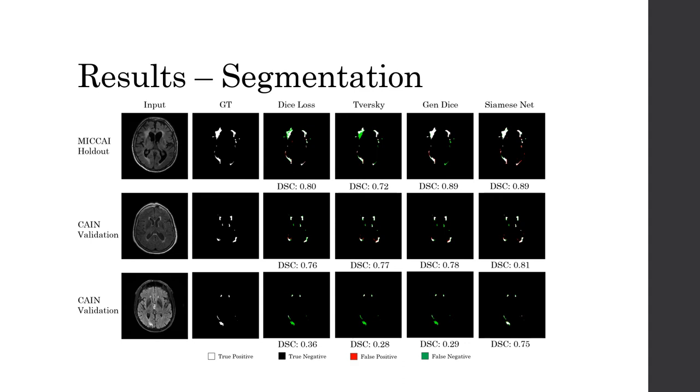Here we present a sample of our segmentations. We benchmarked our method by training the same generator with other state-of-the-art loss functions. We developed our method on the MICCAI 2017 WMH Grand Challenge dataset. With 60 data volumes released publicly, we reserved six as a holdout set. As seen on the top row, our method shows similar or better performance on the holdout set compared to the benchmark.